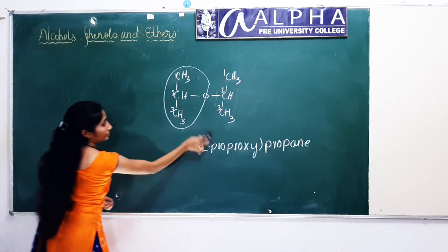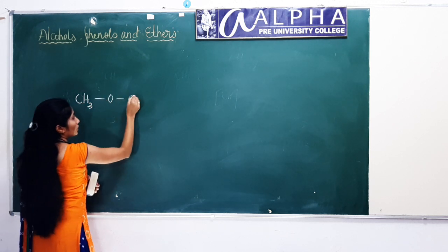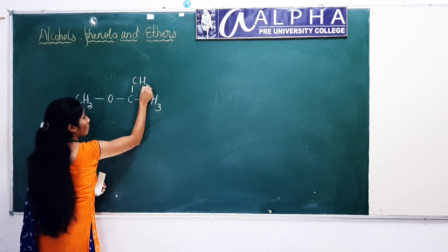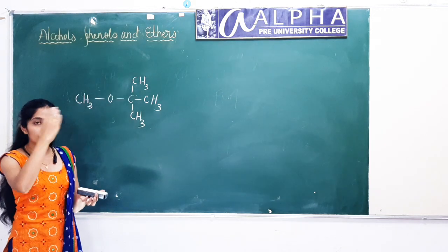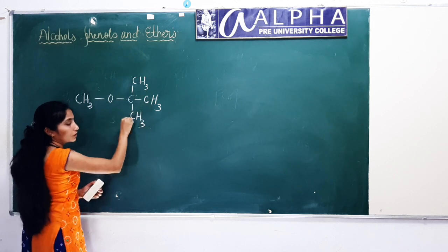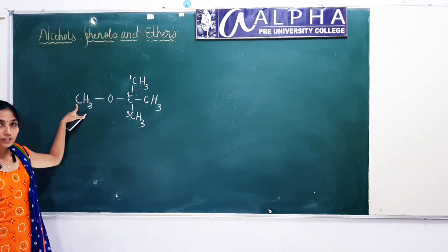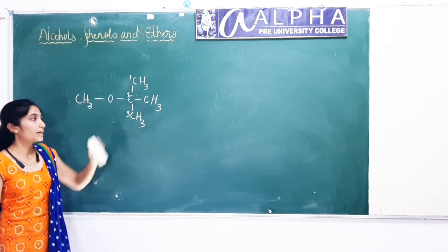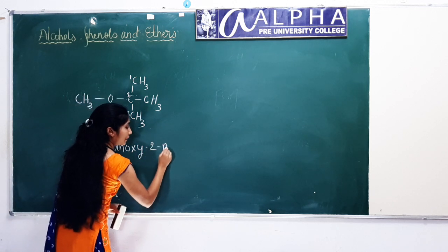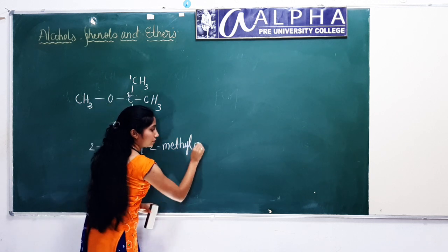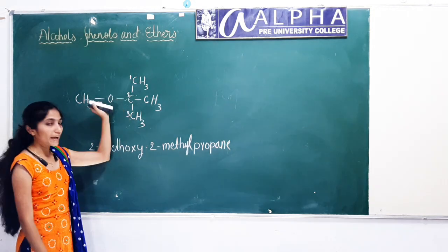Let us take another example: a compound with a central carbon bearing –O–CH₃, –CH₃, –CH₃, and another –CH₃ — a tertiary carbon atom. First determine the parent chain; you can take either 1, 2, 3 in any direction. At the second position on carbon, both a methoxy group and a methyl group are present. So name it 2-methoxy-2-methylpropane. This is the IUPAC name of this compound.